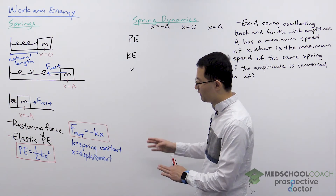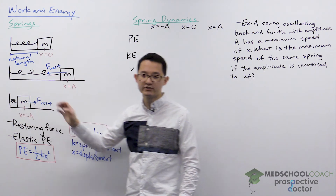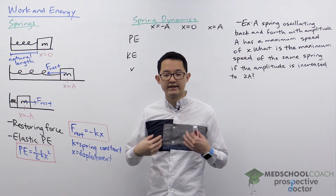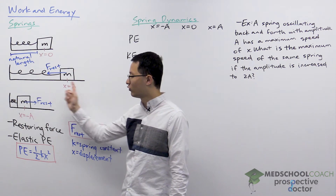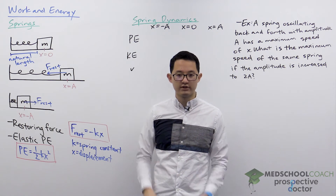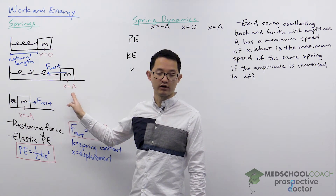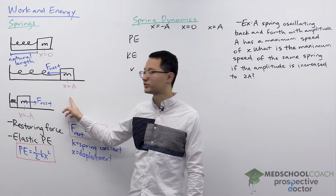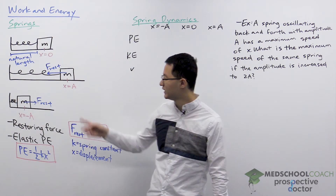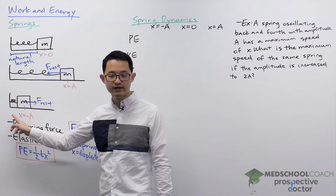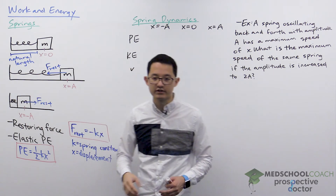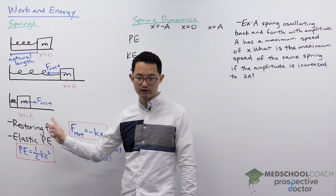When you pull on a spring and let go, it exhibits harmonic motion, oscillating back and forth between amplitude negative a and a. As it oscillates, energy is converted from one form to another. At the amplitude there is large displacement and therefore lots of potential energy. As it returns to equilibrium, potential energy converts to kinetic energy. That kinetic energy carries the mass to the other amplitude, where it slows down and kinetic energy converts back to potential energy, and the process repeats.